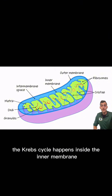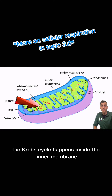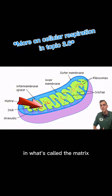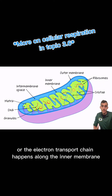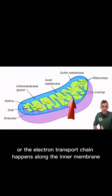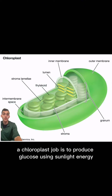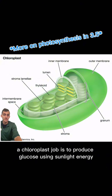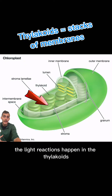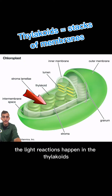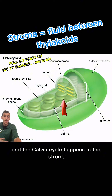The Krebs cycle happens inside the inner membrane in what's called the matrix, and then oxidative phosphorylation, or the electron transport chain, happens along the inner membrane. A chloroplast's job is to produce glucose using sunlight energy. The light reactions happen in the thylakoids, and the Calvin cycle happens in the stroma.